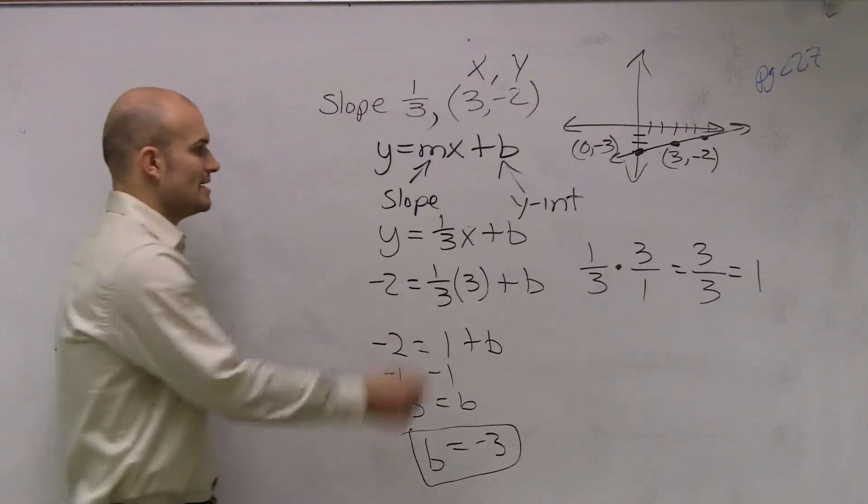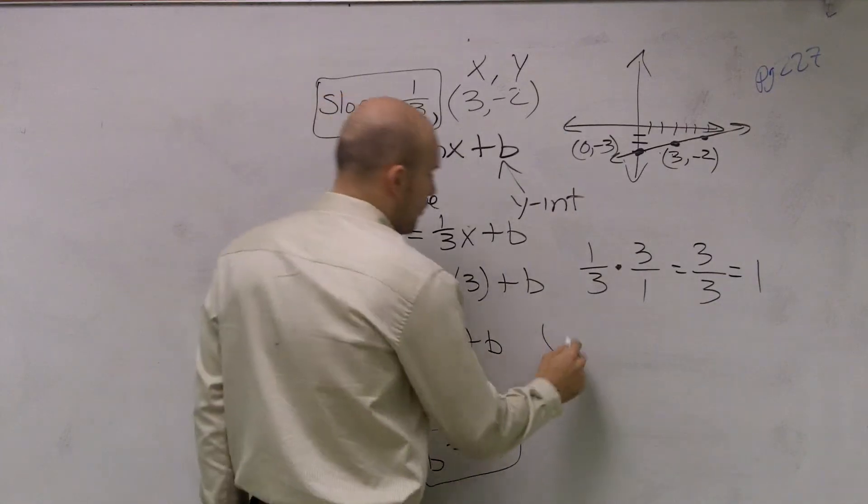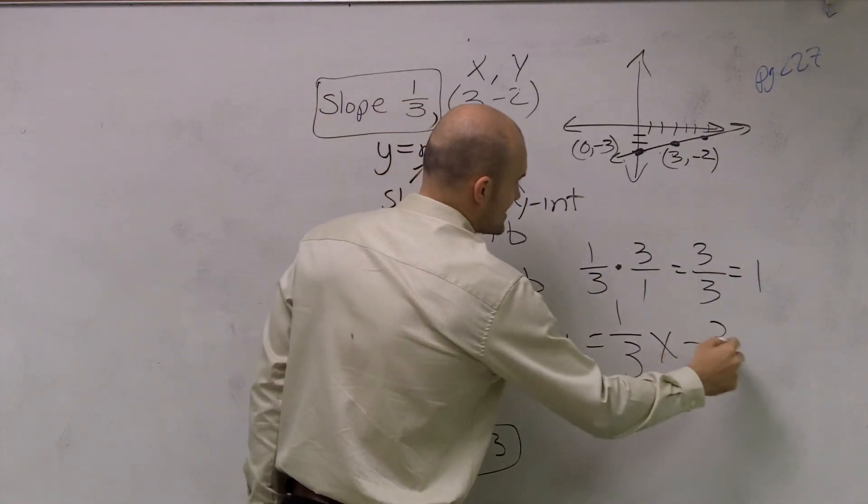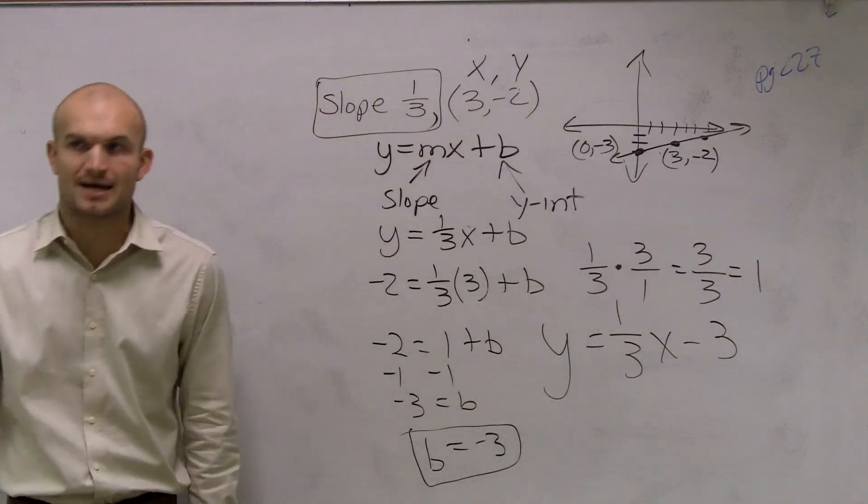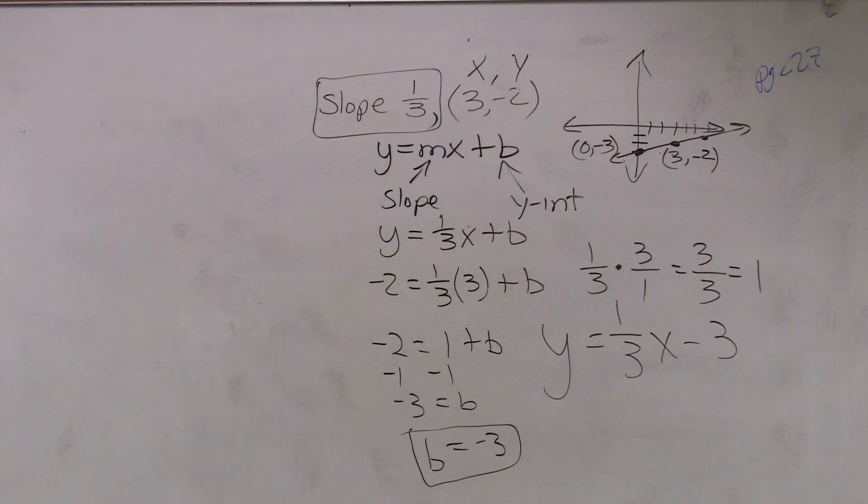Yes. Did I already know what the slope was? So now I can say y equals one-third x minus 3 is my equation of my line. Got it? Okie-doke, done. There you go.